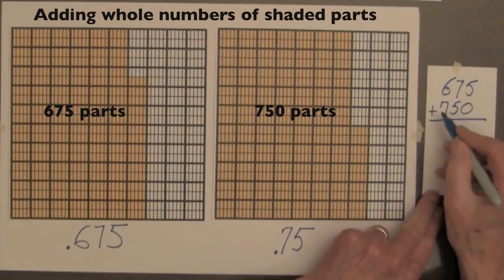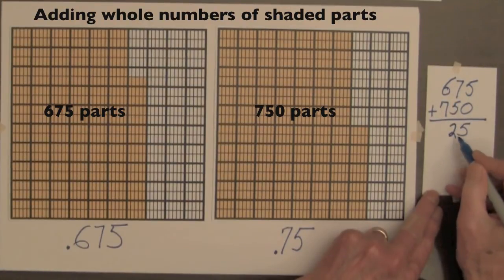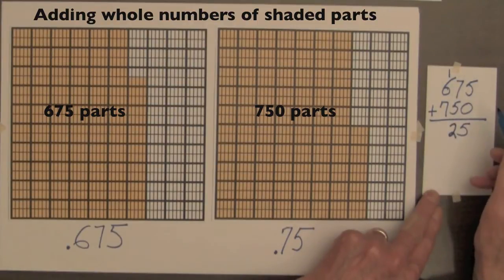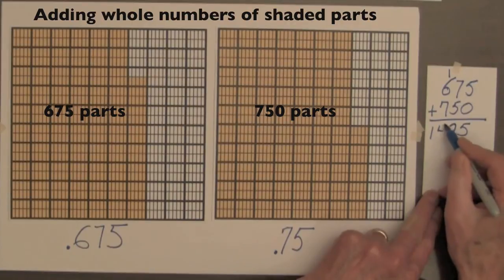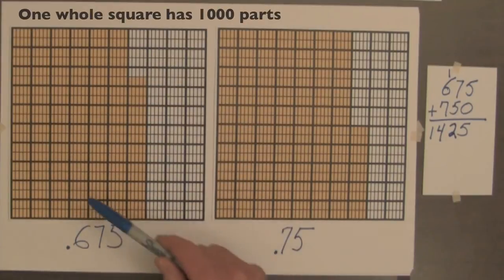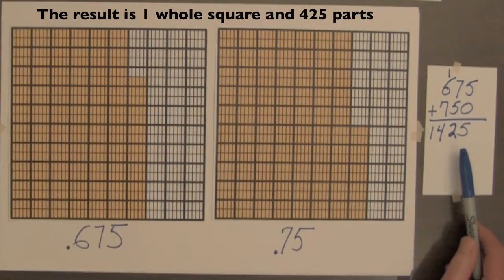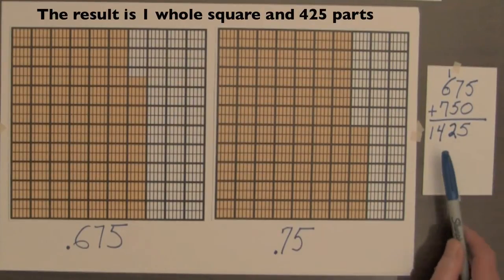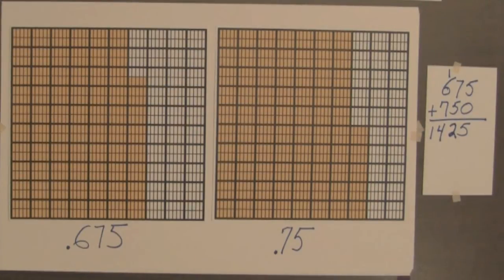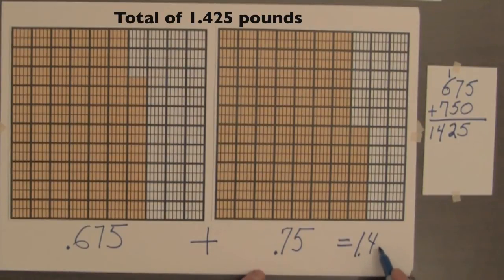So we'll add these two numbers. Seven and five are twelve — it's just like adding whole numbers. Here we regroup the one. That gives us one thousand four hundred and twenty-five parts. Since one whole square has a thousand parts, one thousand four hundred and twenty-five parts is one whole square and four hundred and twenty-five parts out of a thousand. So the sum of these two decimals equals one and four hundred and twenty-five thousandths pounds.